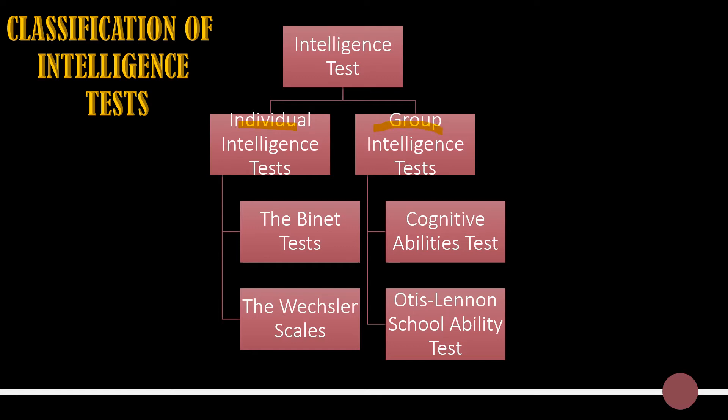Individual intelligence test is administered on one individual at a time. On the other hand, group intelligence test is administered on more than one individual at a time.